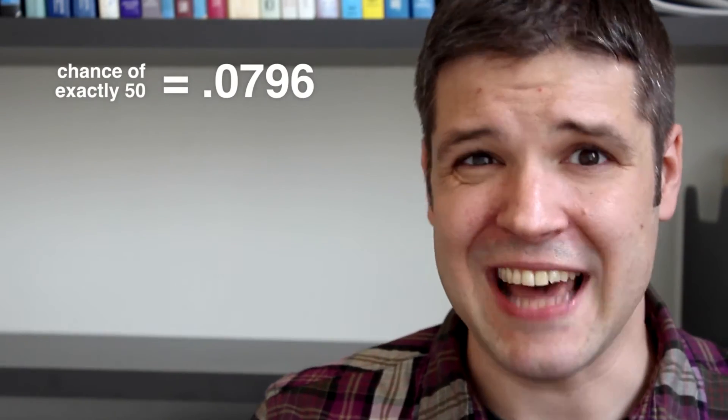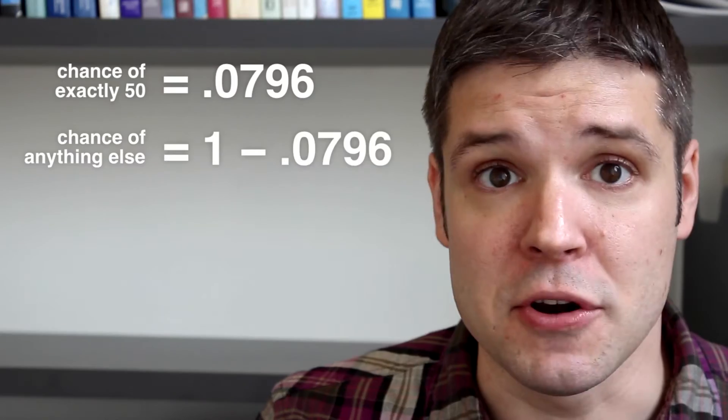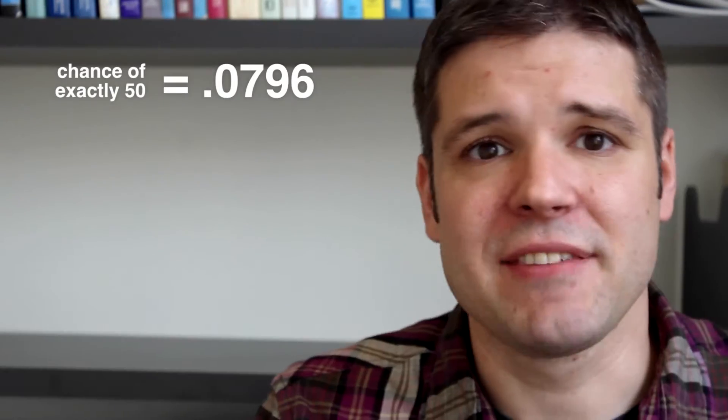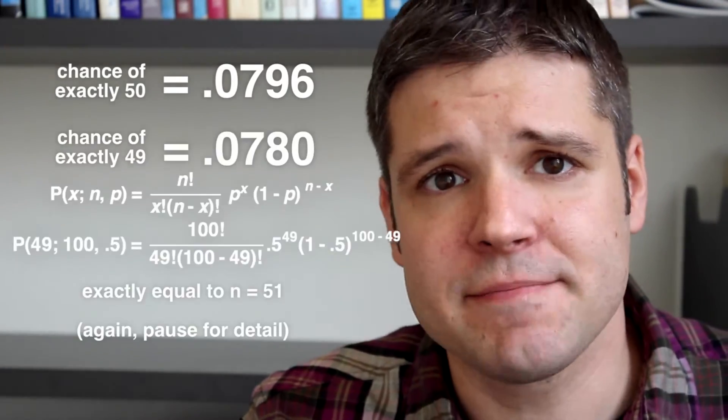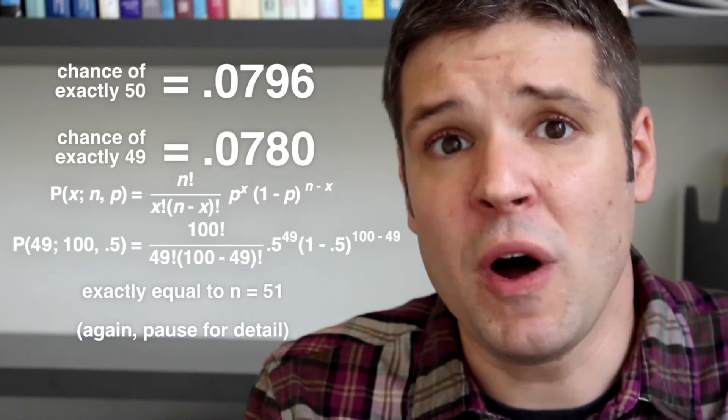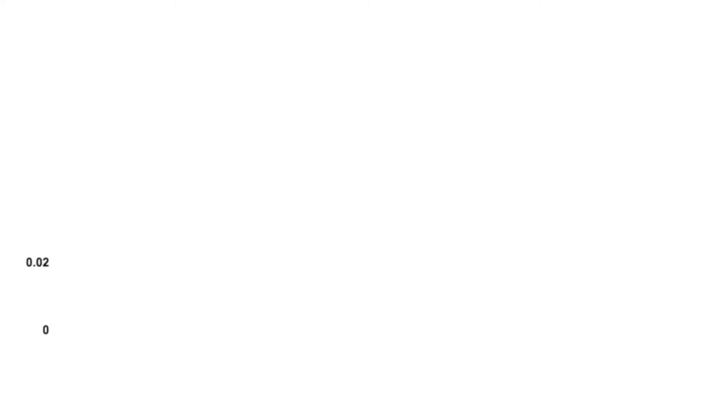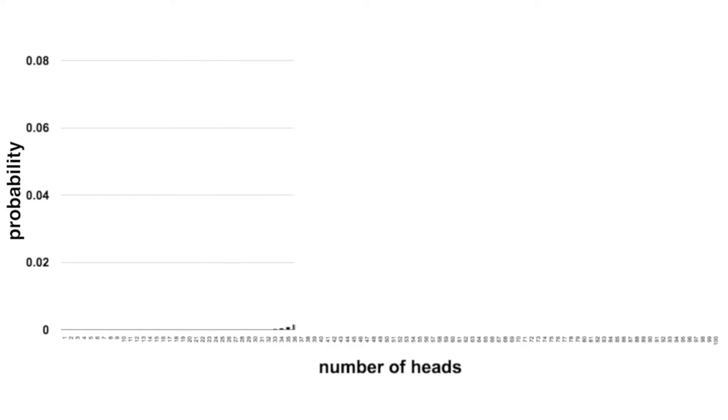So if you had to bet on whether it would be exactly 50 heads or any other number, you should bet on the latter. The chance of landing on heads exactly 49 times is slightly less, equal to the chance of landing on it 51 times. And so on. Overall, if you chart the likelihood that it'll land on any exact number of heads, it'll look like this.